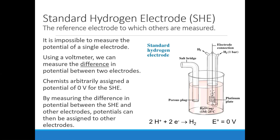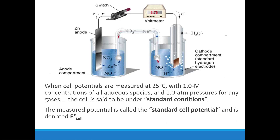Now you take this half cell and connect it to any other half cell, and you measure the difference in potential between the two electrodes. You give hydrogen a voltage of zero volts — it's your standard. Then you assign the voltage you measured to the other electrode. So you might say copper is positive 0.34 compared to hydrogen, or zinc is negative 0.76 compared to hydrogen. When you measure this zinc and hydrogen cell, you can see on the voltmeter 0.76 volts. So if hydrogen is given a value of zero, you say zinc has a voltage of 0.76.